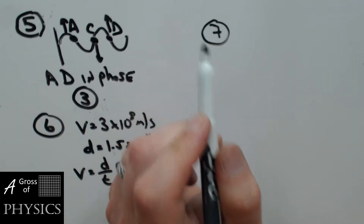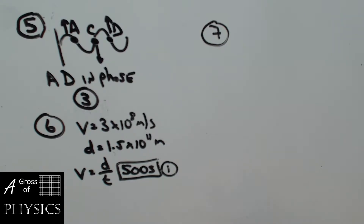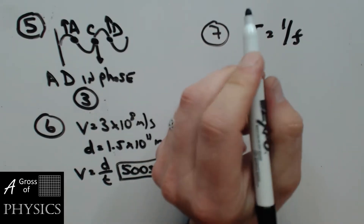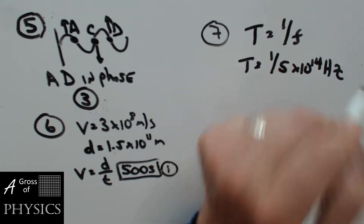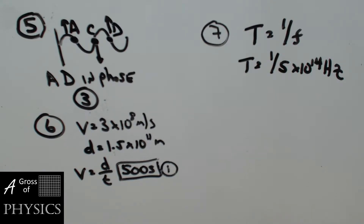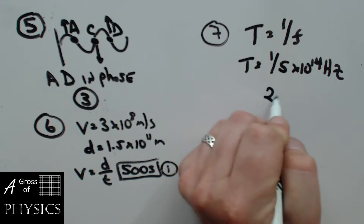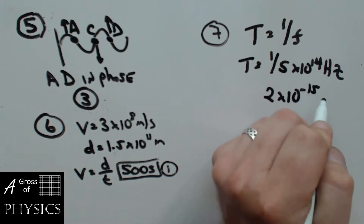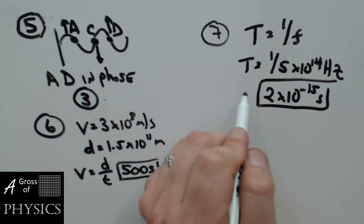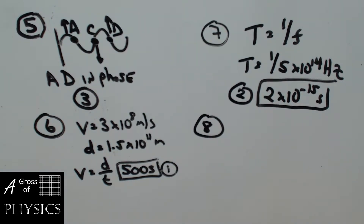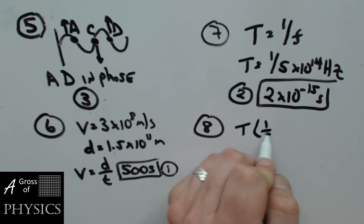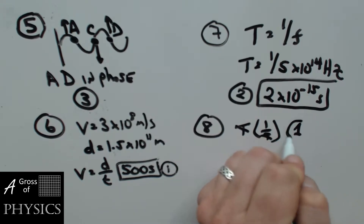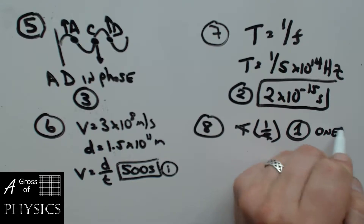Number seven: frequency of light is 5 times 10 to the 14 hertz. What's the period? Time and frequency are inversely related, so T equals 1 over F. 1 divided by 5×10¹⁴ hertz gives 2 times 10 to the negative 15 seconds. That's choice two. Number eight: the product of a wave's frequency and its period. If I multiply period times 1 over period, which is frequency, the units cancel and I'm left with 1. Which is choice one.